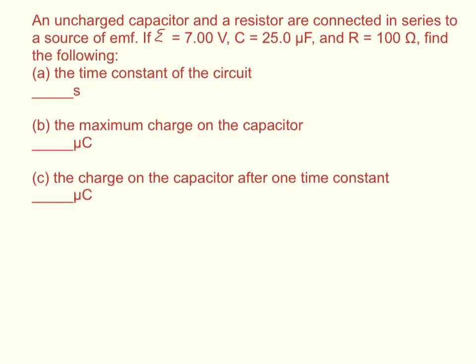If we take the equation, the charge at any given time is equal to the maximum charge Q times 1 minus e to the negative t over RC, where e is Euler's constant, which is approximately 2.718. You just have to type in e in your calculator, or you can Google it.